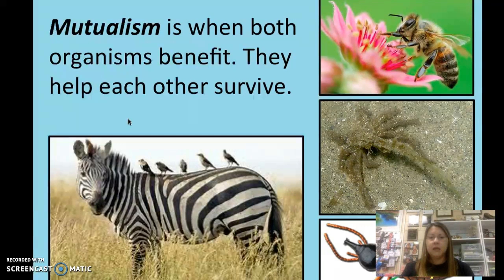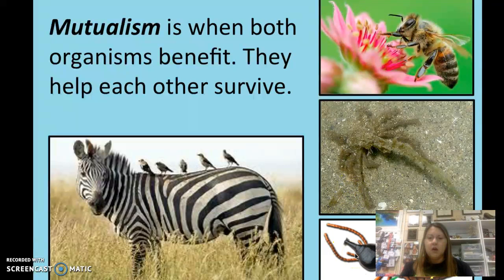Bees pollinate flowers and also get nectar — another mutualistic relationship. There's also a spider crab covered with algae, which is a mutualistic relationship. Termites have microorganisms living inside their digestive system that help break down the cellulose and wood that termites consume, because termites can't actually digest cellulose and wood on their own — the microorganisms in the body have to do that for them.